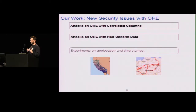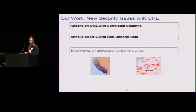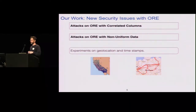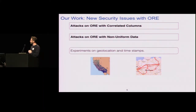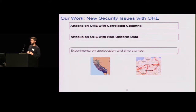Throughout the talk, we experiment with two datasets. I was personally interested in using order-revealing encryption for geolocation data for two projects: encrypting personal mobile phone histories with ORE for a more private personal history search, and encrypting facility locations for another project.